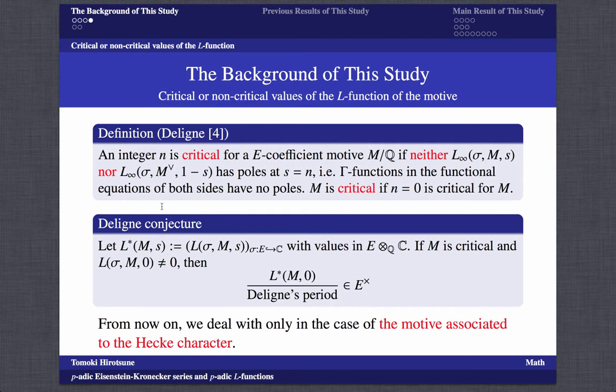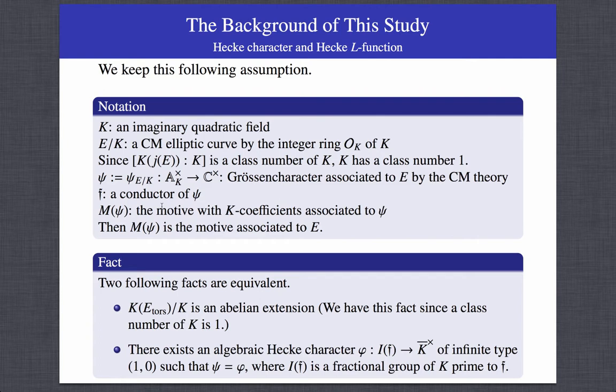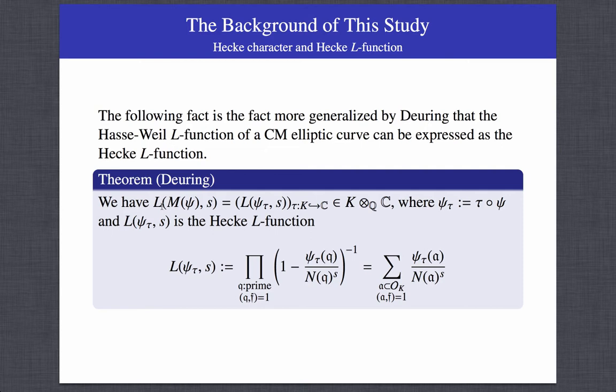From now on, we deal only with the case of the motive associated to the Hecke character. We keep the following assumption: let E be an elliptic curve over an imaginary quadratic field K with complex multiplication by the ring of integers. K has class number 1, and there exists a Grössencharacter whose conductor is F. We know that two following facts are equivalent. By Deligne's theorem, the Hasse-Weil L-function of the elliptic curve can be expressed as the Hecke L-function.